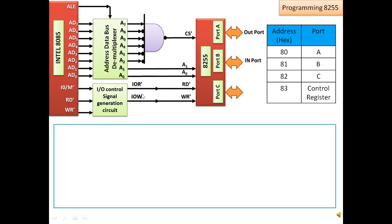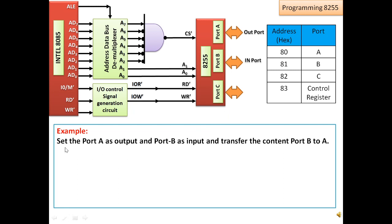Let us take a simple example. We have already discussed the interfacing of 8255 with 8085 in IO mapped IO method in previous lectures, where we reserved address 80 for Port A, 81 for Port B, 82 for Port C, and 83 for the control register inside the 8255. We will stick to the same interfacing strategy. In this example, we will set Port A as output port and Port B as input port and transfer the content available at Port B to Port A.